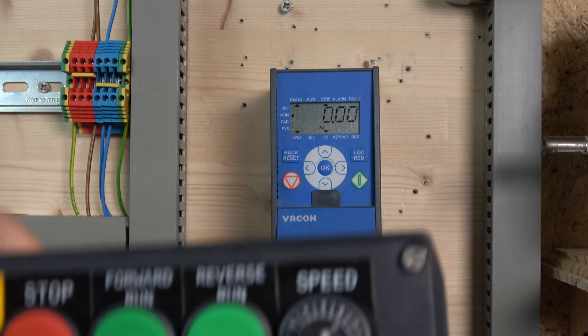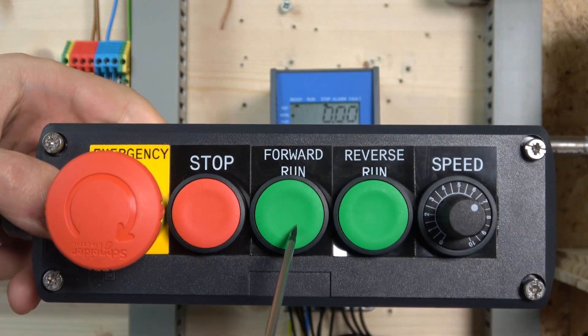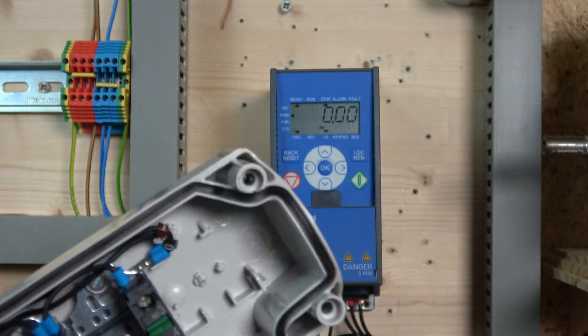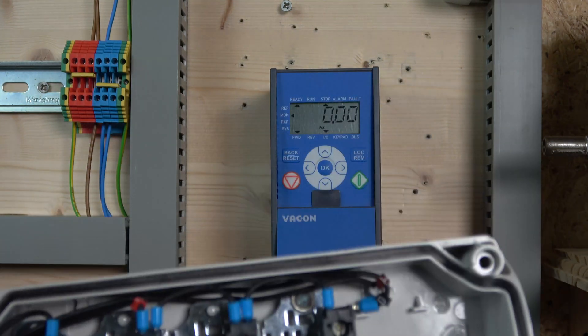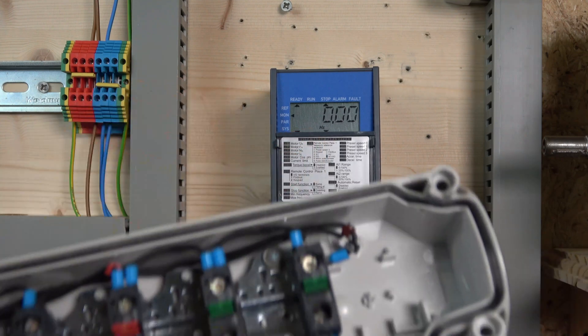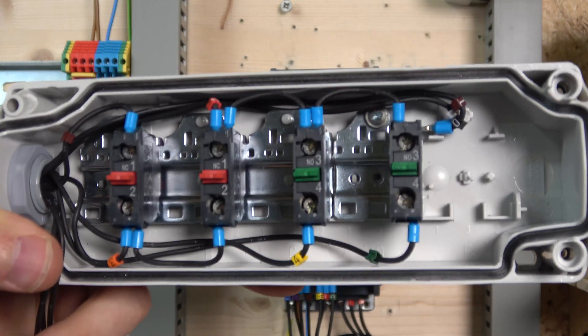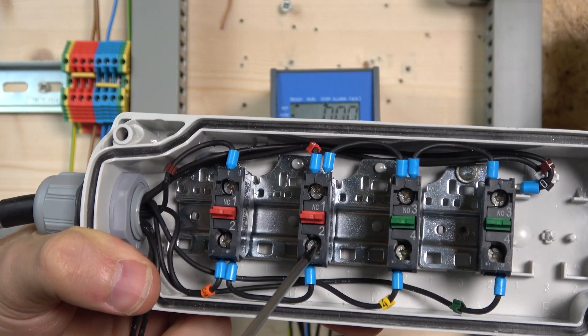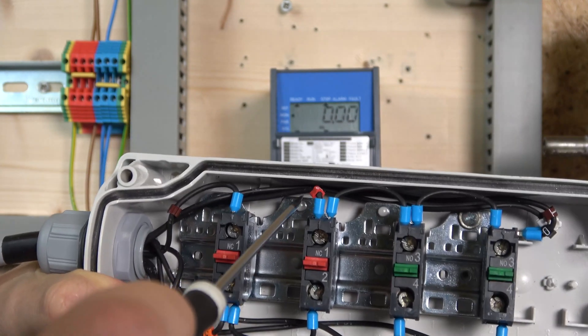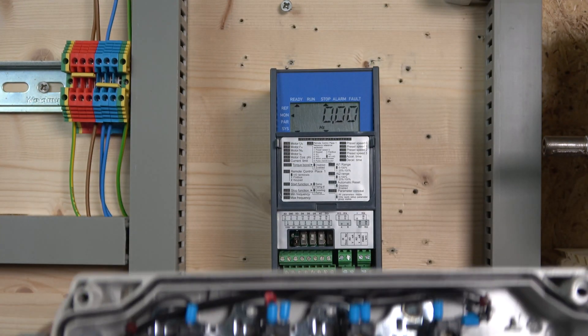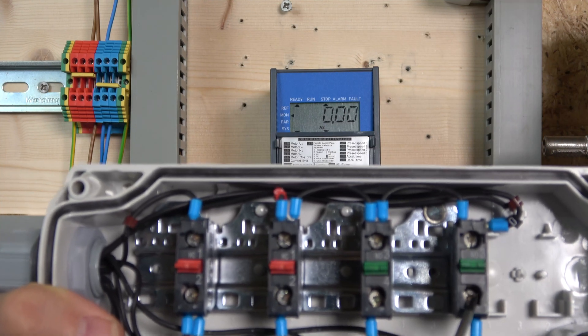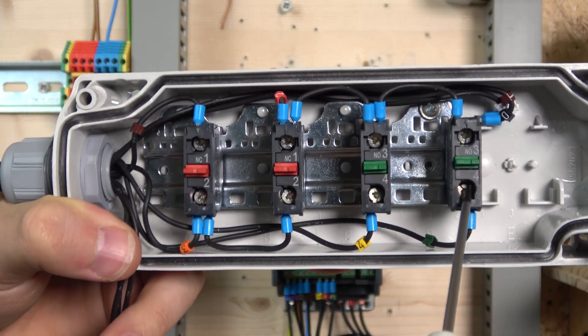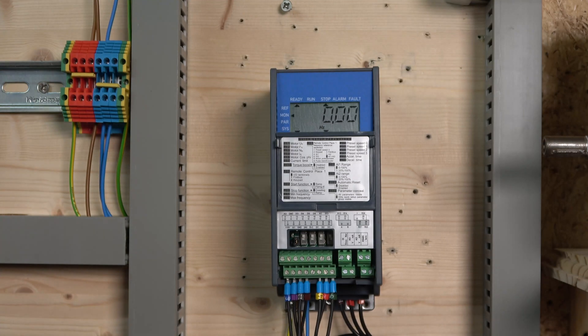For three-wire control, our station has stop, run forward, run reverse, and speed controller. Speed control stays the same as before. We're using digital inputs 1, 2, and 3. The 24V signal goes to the e-stop, then from the stop signal - wire number 2 - goes to digital input 2. Start signal goes to digital input 1, and reverse start goes to digital input 3.